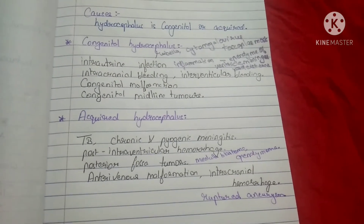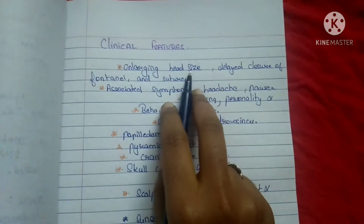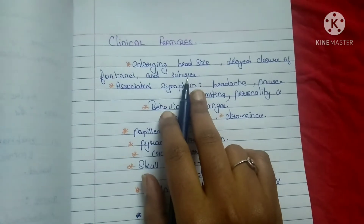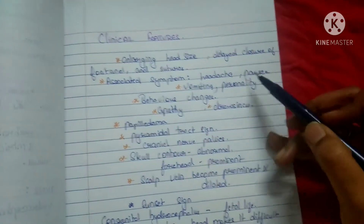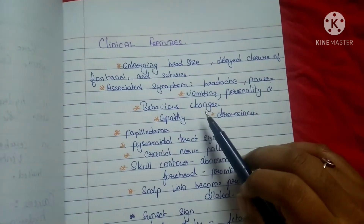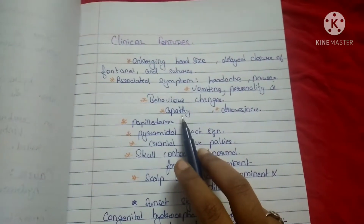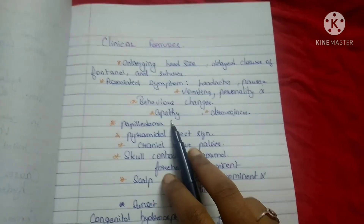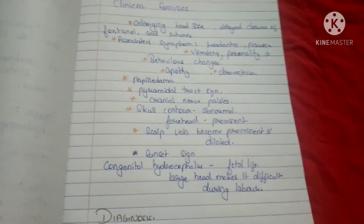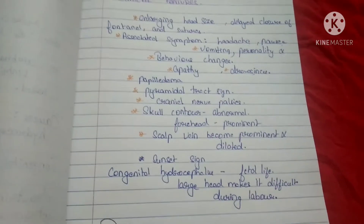The features of hydrocephalus include enlarged head size, delayed closure of the fontanelle and sutures. Associated symptoms include headache, nausea, vomiting, personality and behavior changes, apathy — meaning loss of interest with lack of enthusiasm — and drowsiness. Papilledema occurs when the optic nerve becomes swollen due to pressure buildup around it.